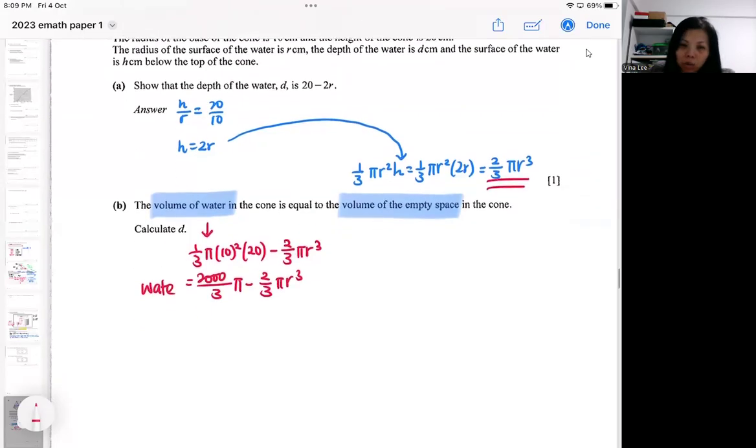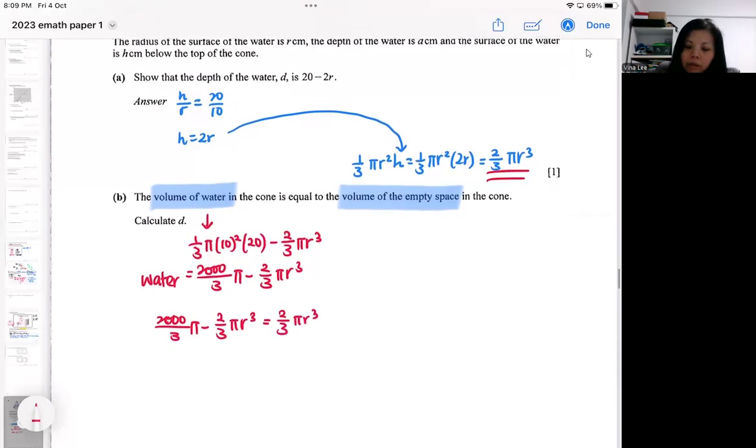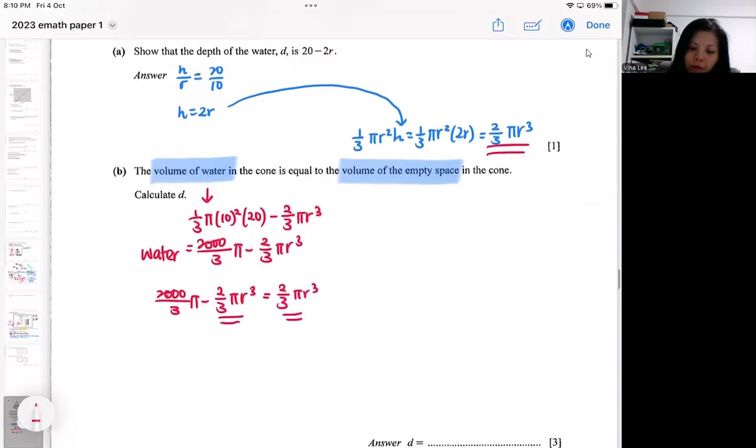So they say that they are equal. So once you find them separately, you just make them equal. So the water volume is the same as the empty space. So you realize these two are identical. So you can actually put it over to one side. So if you put it over to one side, it becomes 4 third pi r cubed.